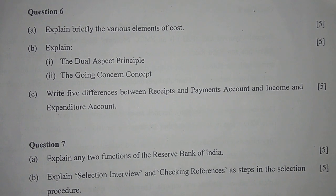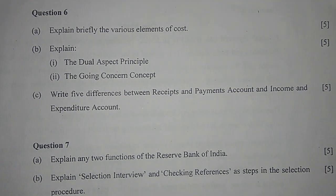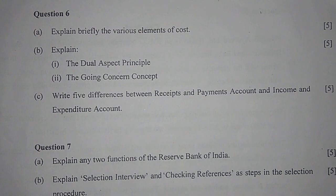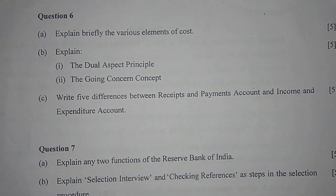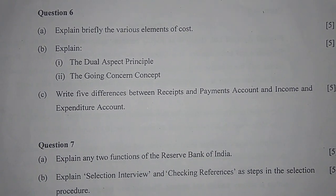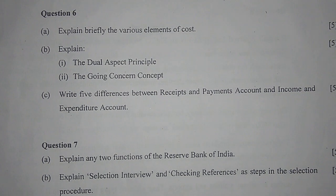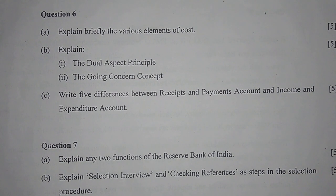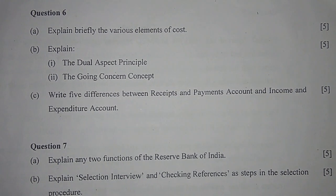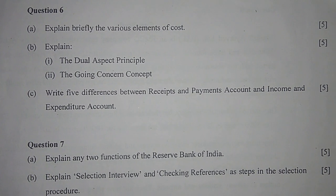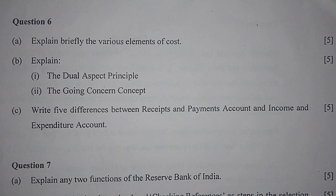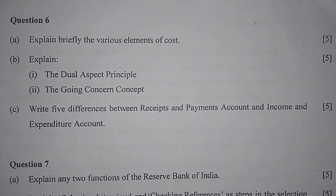The second element is labor cost — the cost of human effort required to convert materials into the finished product, for example workers, supervisors, and managers. There are two types: direct labor, which can be directly identified with a particular product, and indirect labor, which cannot be directly identified with a particular product.